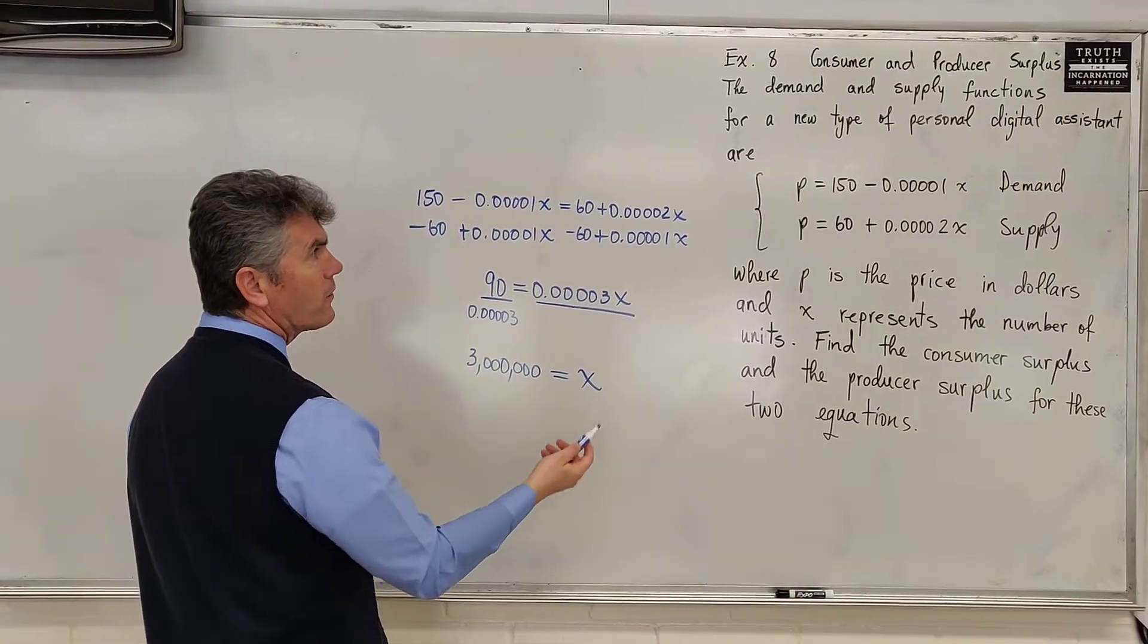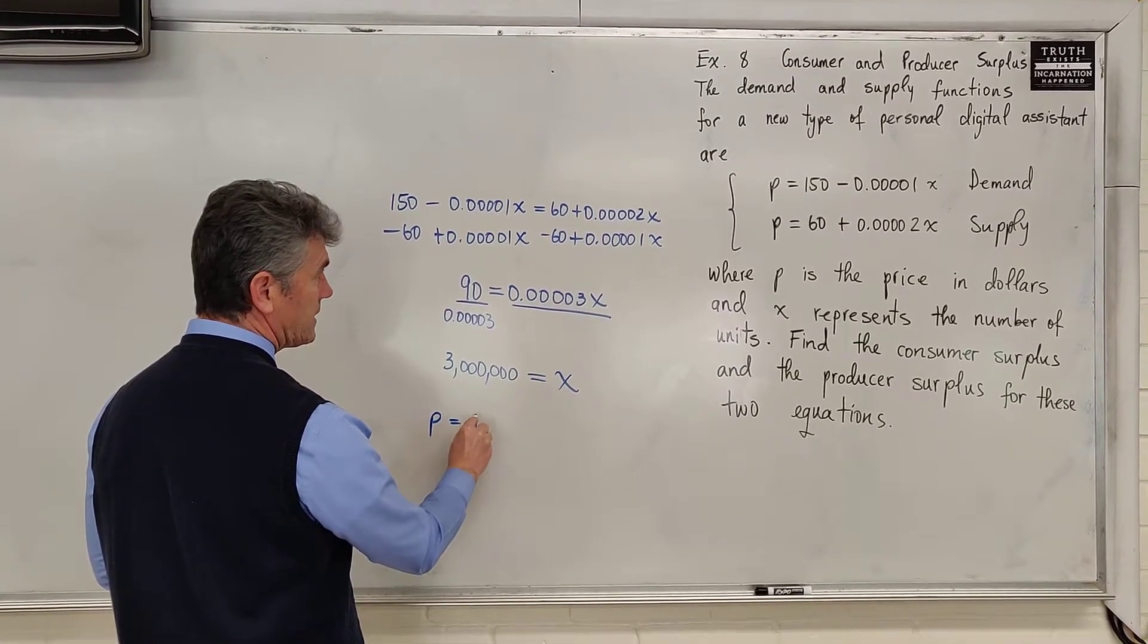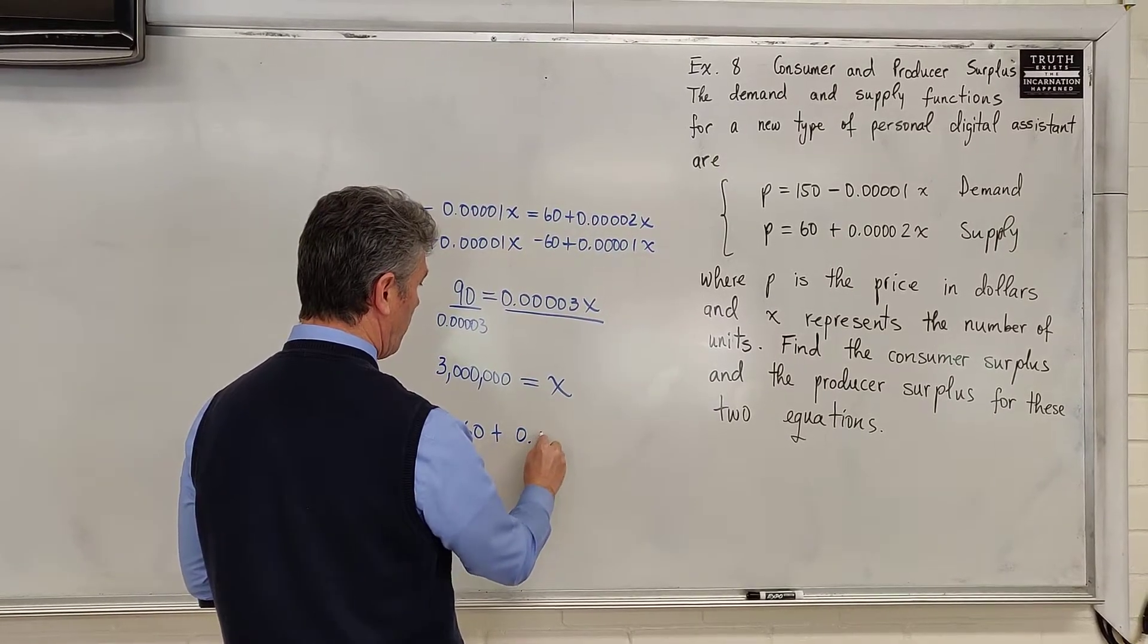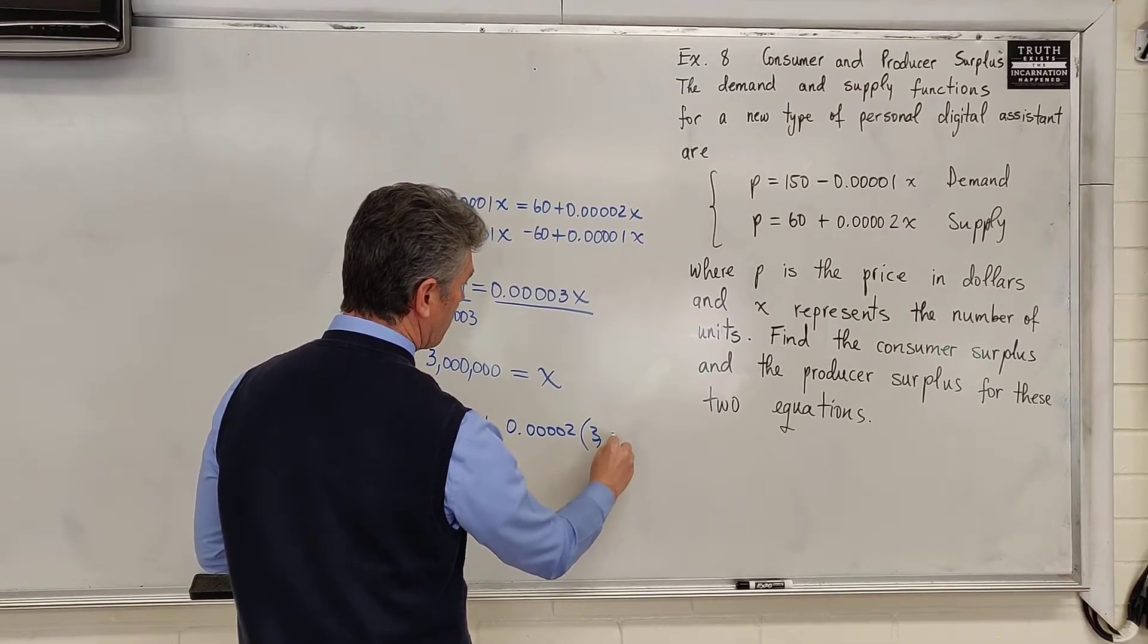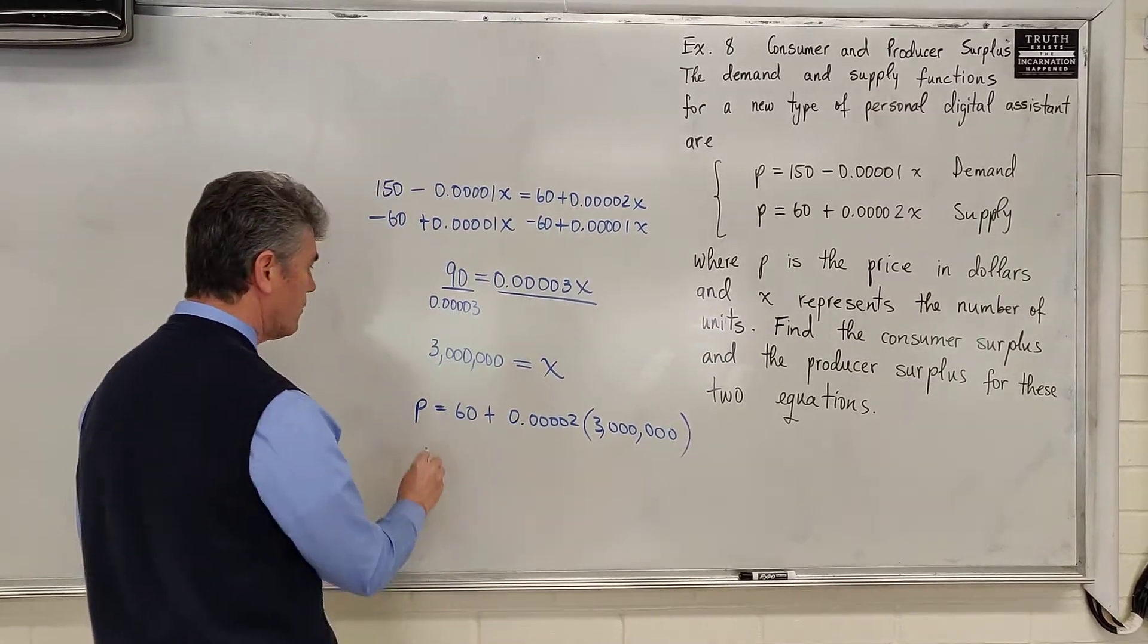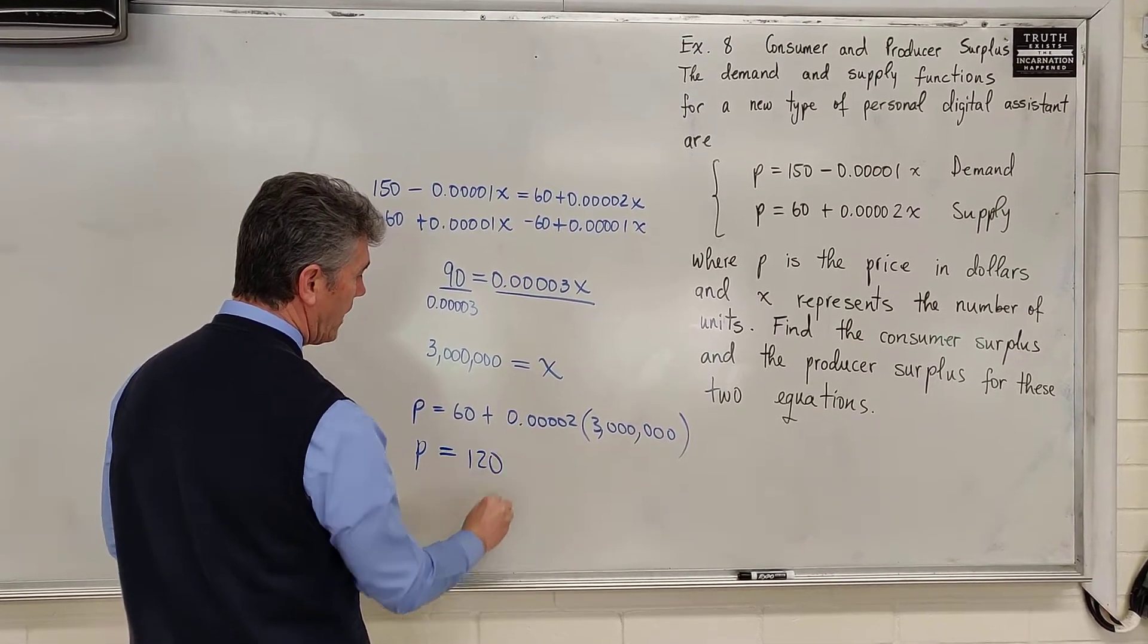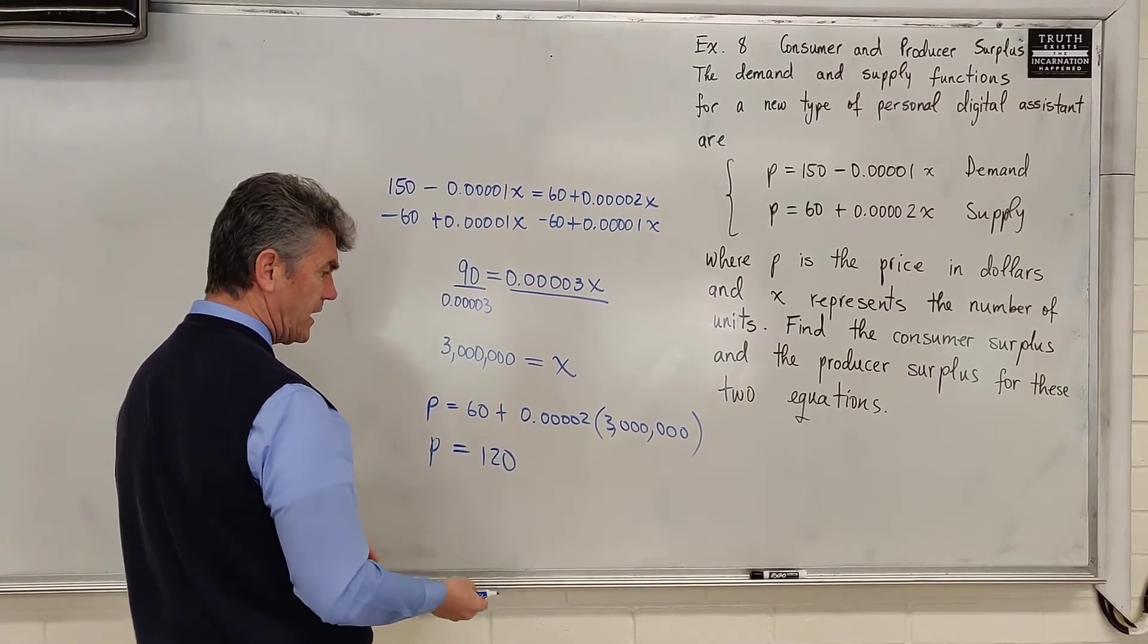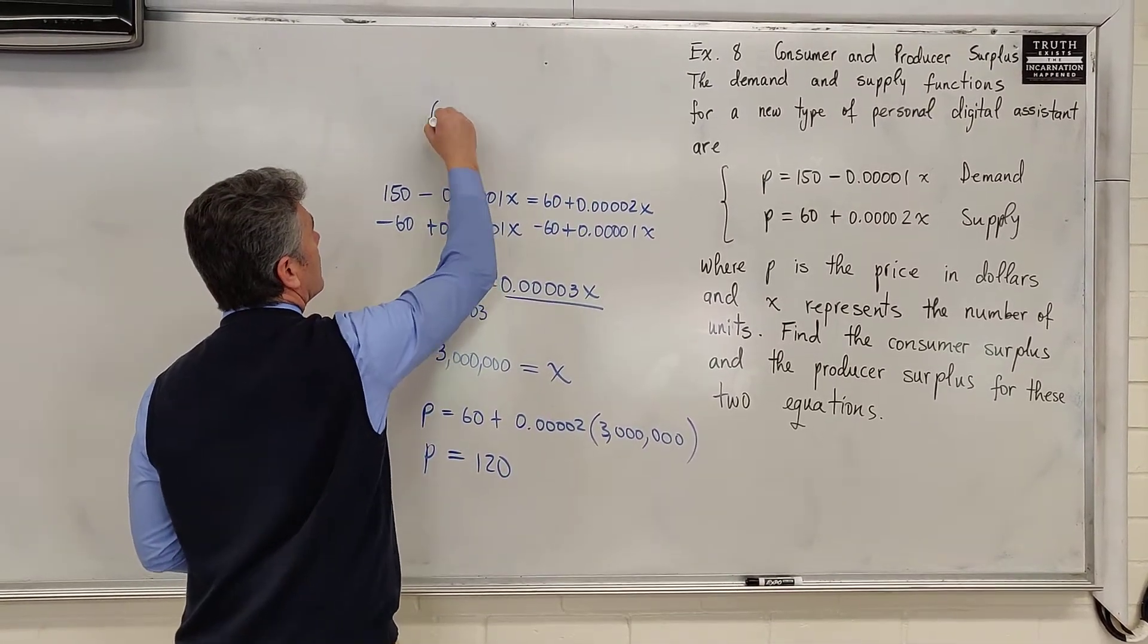I'm going to take the supply equation and write P = 60 + 0.0002 times 3 million. We multiply and get that P equals 120. We know the price and the number of units produced.